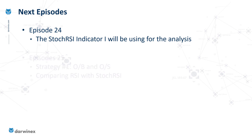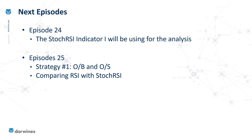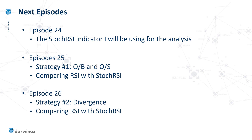In the next episode I'm going to be looking specifically at the first strategy I'll be performing my analysis on — broadly, looking for overbought and oversold signals — and comparing the effectiveness in a real trading strategy of the two indicators we've talked about. In the following episode, I'm going to be looking at divergences in both RSI and the Stochastic RSI.